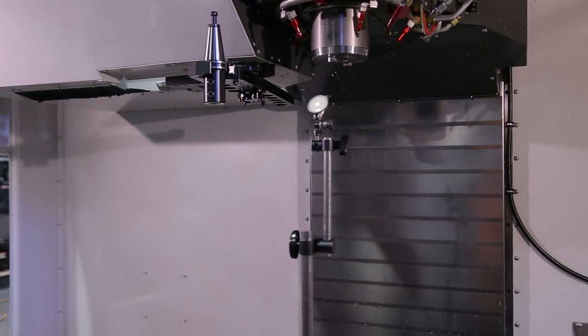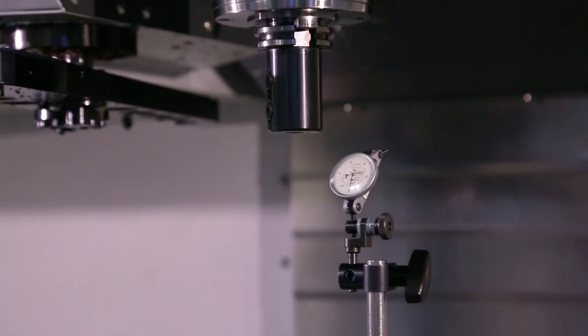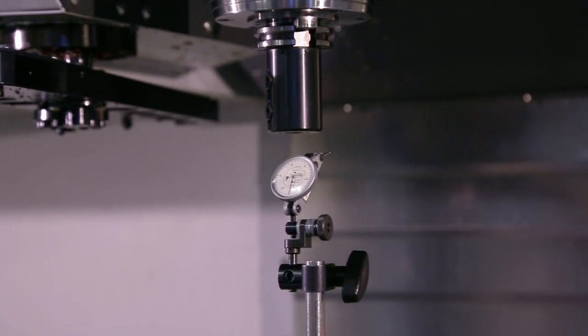Remove the tool holder from the double arm and insert it in the spindle. Jog the X directly under the spindle.